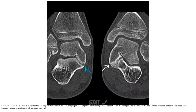Bone CT in a 12-year-old with bilateral ankle and heel pain shows fibrocartilaginous bridging on the left and close osseous coalition on the right, at the osseous medial aspect of the middle facet CN, with broadening and ground sloping of the sustentaculum tali.